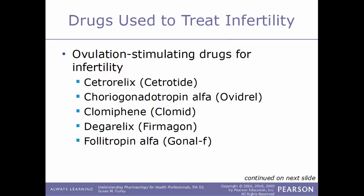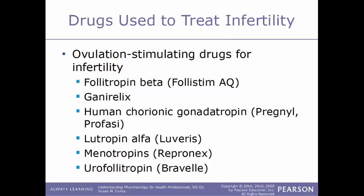Examples of ovulation-stimulating drugs include cetrorelix (trade name Cetrotide), choriogonadotropin alpha (Ovidrel), clomiphene (Clomid), degarelix (Firmagon), follitropin alpha (Gonal-F), follitropin beta (Follistim AQ), ganirelix, human chorionic gonadotropin (Pregnyl and Profasi), lutropin alpha (Luveris), menotropins (Repronex), and urofollitropin (Bravelle).